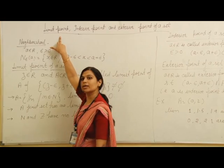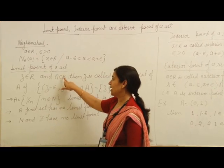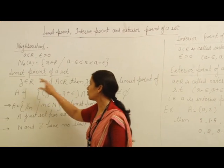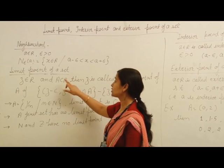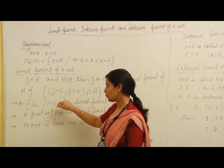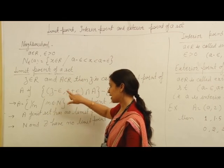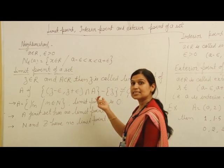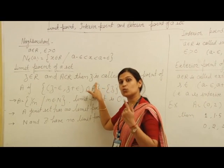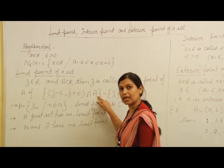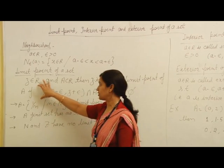Now we come to our main topic: Limit Point. Let Z be any real number and A be any subset of R. Then Z is called a Limit Point of A if in each neighborhood of Z, there exists at least one point of A other than Z. Mathematically, for each open interval (Z minus epsilon, Z plus epsilon), the intersection with A minus {Z} is non-empty. This is the mathematical definition of limit point Z.